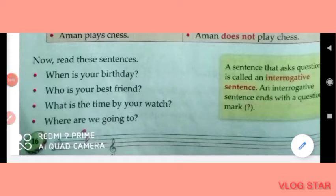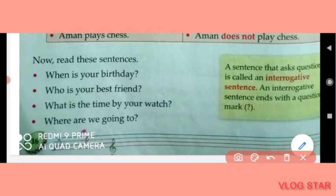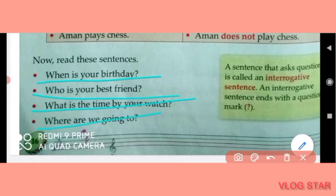Hello friends, welcome back to my channel Wings to Fly. In today's video we will learn about interrogative, imperative and exclamatory sentences. First, let's see what is an interrogative sentence. Read these sentences: When is your birthday? Who is your best friend? What is the time by your watch? Where are we going to?